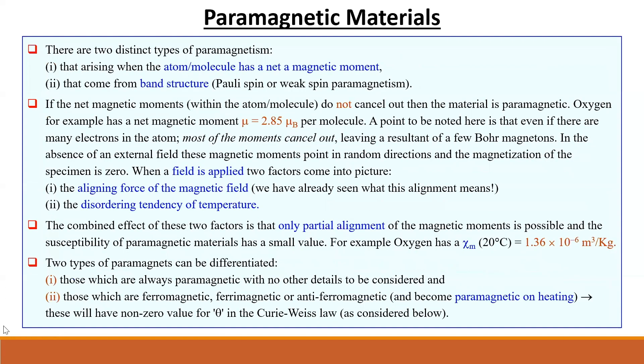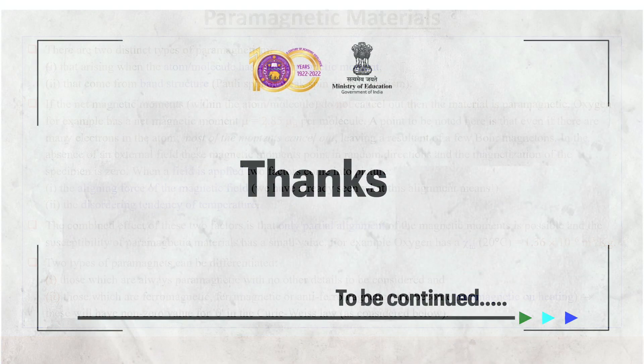The next category is paramagnetic materials. There are two distinct types of paramagnetism arising when the atom or molecule has a net magnetic moment.